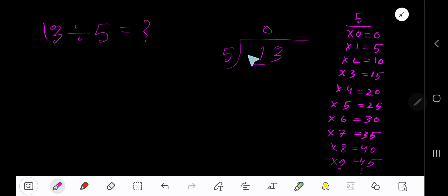5 goes into 1 how many times? 0 times. And since 1 is less than 5, 0 times 5, 0. Subtract from 1. Bring down the next digit, 13.